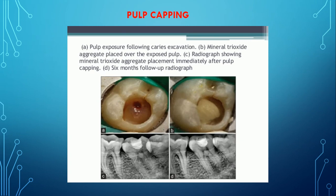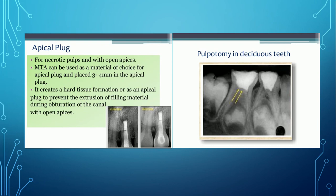In case of pulp capping, following caries excavation and pulp exposure, mineral trioxide aggregate is placed over the exposed pulp. A radiograph shows MTA placement immediately after pulp capping, and a 6-month follow-up radiograph confirms healing. For necrotic pulps with open apex, MTA is used as the material of choice for an apical plug placed 3 to 4 mm apically — also called apexification — creating hard tissue formation or an apical plug to prevent extrusion of filling material during obturation of a canal with open apex.